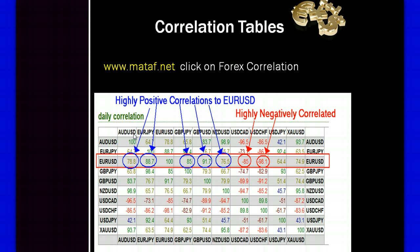If you want to monitor correlations on various timeframes, you can go to the site mataf.net and click on forex correlations. Here's an example of a daily correlation. The euro/yen has an 88.7% correlation with the euro/US dollar, and the pound/US dollar has a 91.7% positive correlation. On the negative side, the US dollar/CAD is at minus 85% and the US dollar/Swiss is at minus 98.1%, so as the euro/US dollar moves up, the US dollar/Swiss will most often move in the opposite direction.